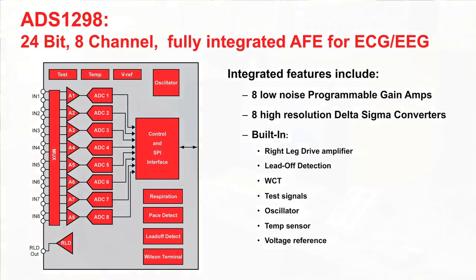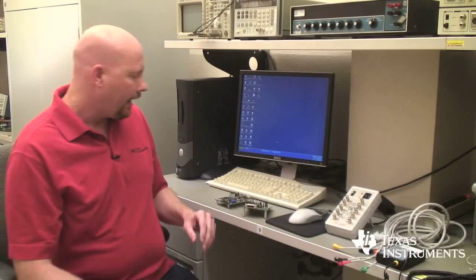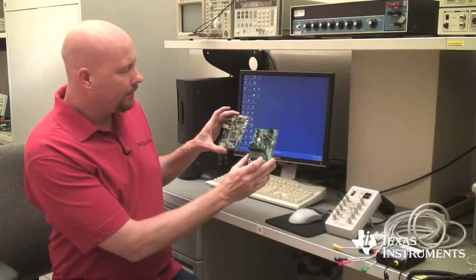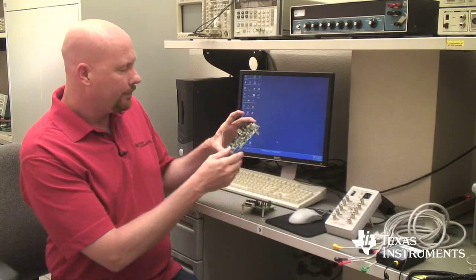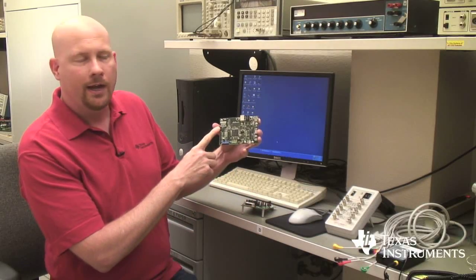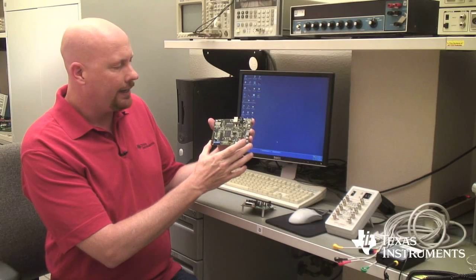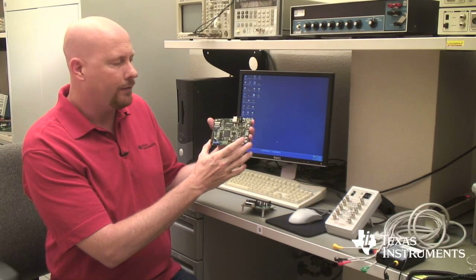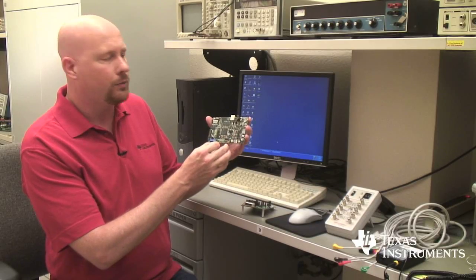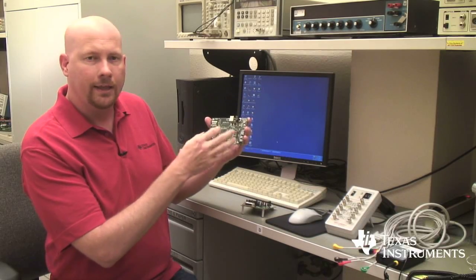When you get a PDK you're actually going to be getting two boards. The larger board is what is designated as the MMB0 board and this board has a TI DSP, a C5507, and it handles the interface for the data between the 1298 and the computer.